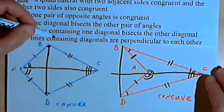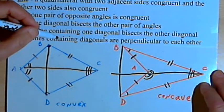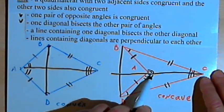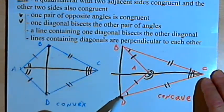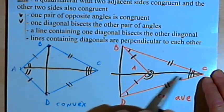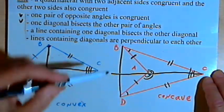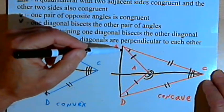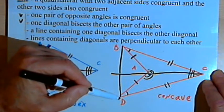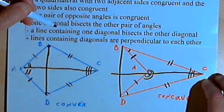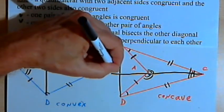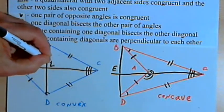This is why the property says a line containing one diagonal. Diagonal AC doesn't bisect BD, but we may be able to show that the line containing AC bisects BD.